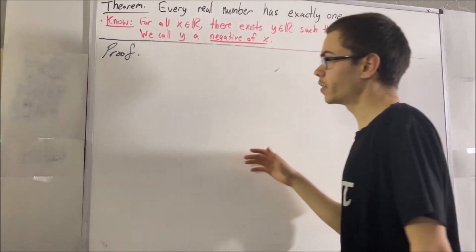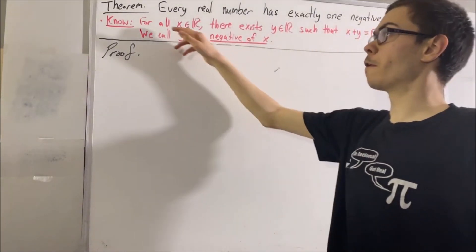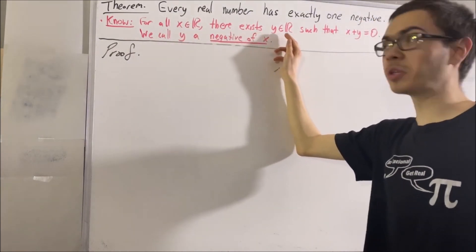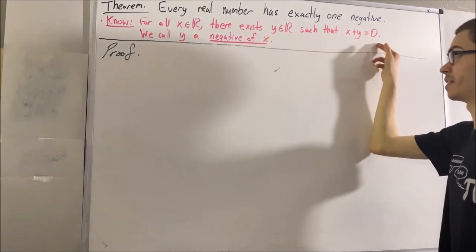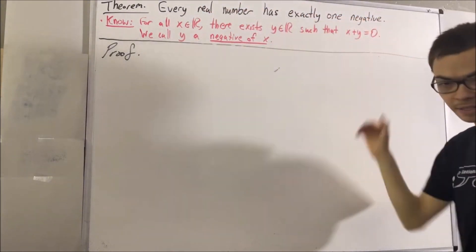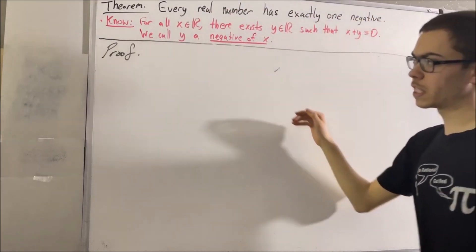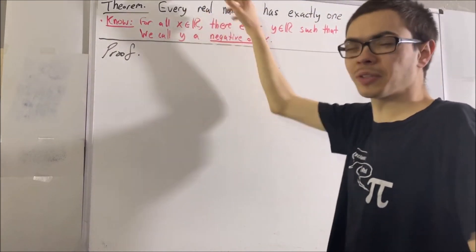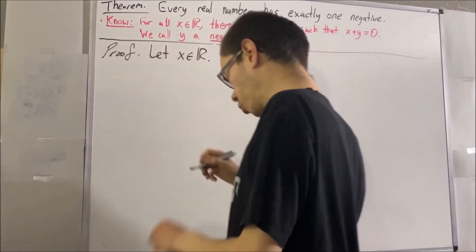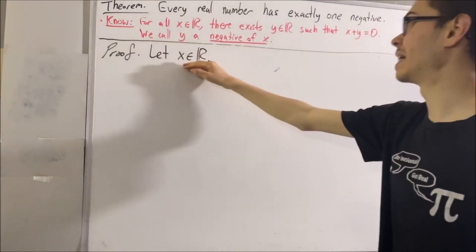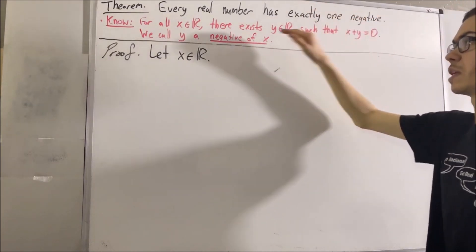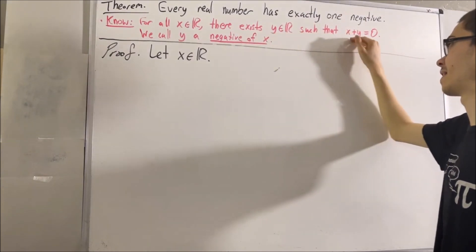But our goal in this video is to prove, for every real number x, there exists exactly one real number y that satisfies this condition. That's really what this theorem is saying. And we're trying to prove a statement about every real number, so give me an arbitrary real number — I'll call it x. And our goal from here is to show that x has exactly one negative. That is, we want to show that there is exactly one real number y that satisfies this condition.